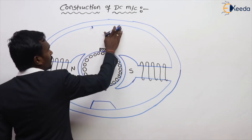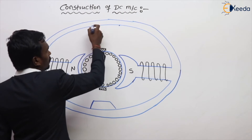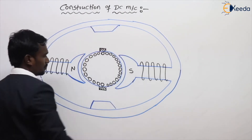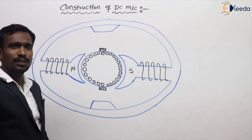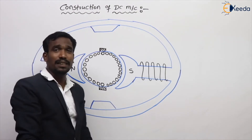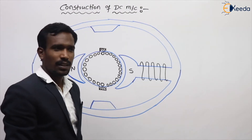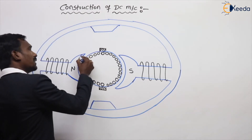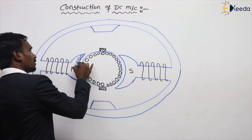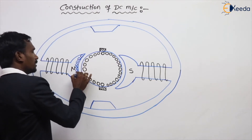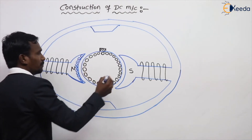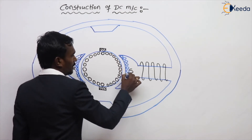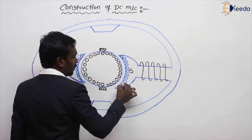These inter poles are exactly in the middle. Inbuilt split rings are there — I will give you later. And here another winding is there which is called compensating winding of my machine. This is called compensating winding of my machine.